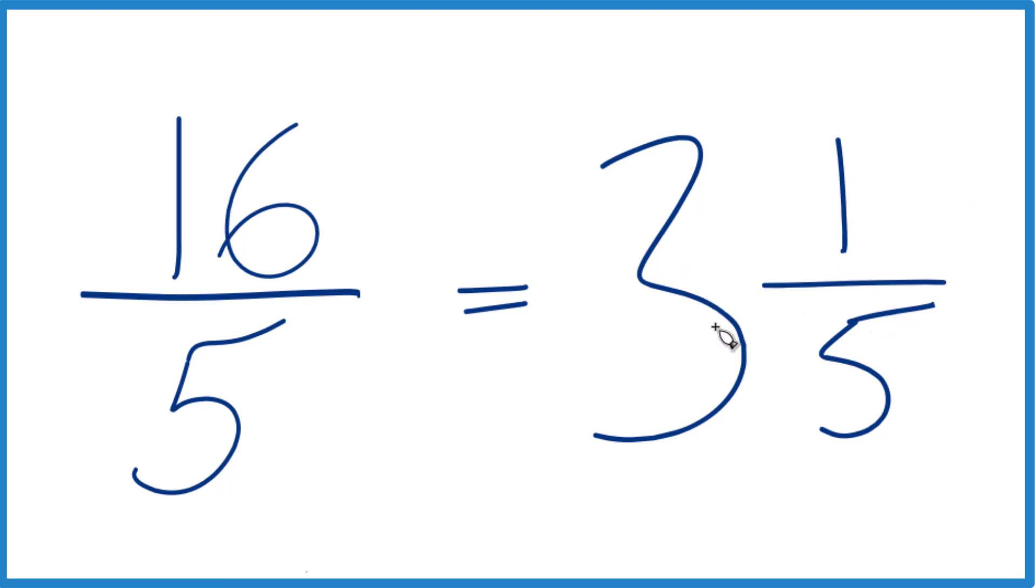And you can check that. 3 times 5 is 15. 15 plus 1, that's your 16. And we just keep these denominators here the same.